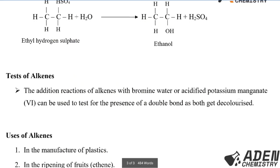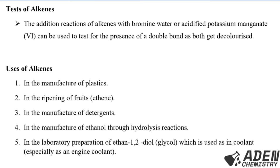For tests of alkenes: the addition reactions of alkenes with bromine water or acidified potassium manganate(VII) can be used to test for the presence of the double bond, as both reagents get decolorized. If you bubble an alkene through bromine water, the bromine water decolorizes. If you bubble through acidified potassium manganate(VII), the purple solution also decolorizes.